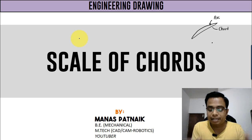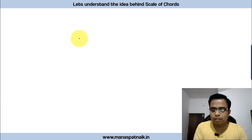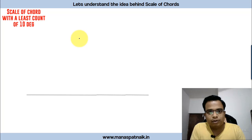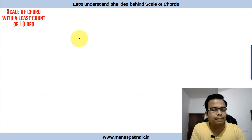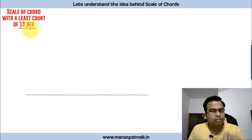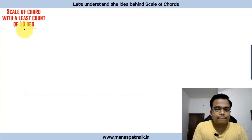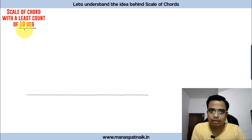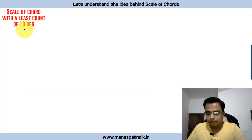Let me show you how this scale of chords can be constructed. First, you need to draw a horizontal line of any length — I suggest around 100 millimeters so the diagram is clearly visible. The scale of chords we are preparing has a least count of 10 degrees, meaning the minimum measurement it will make is 10 degrees.